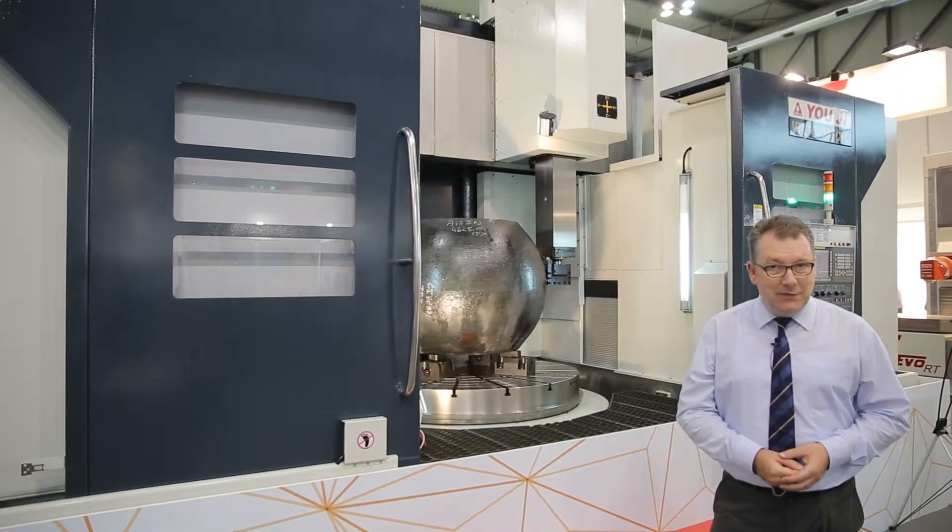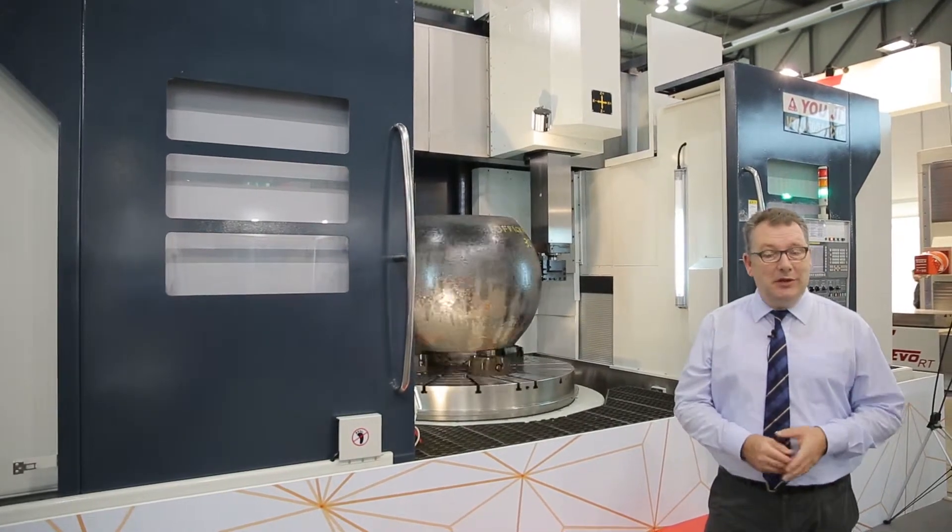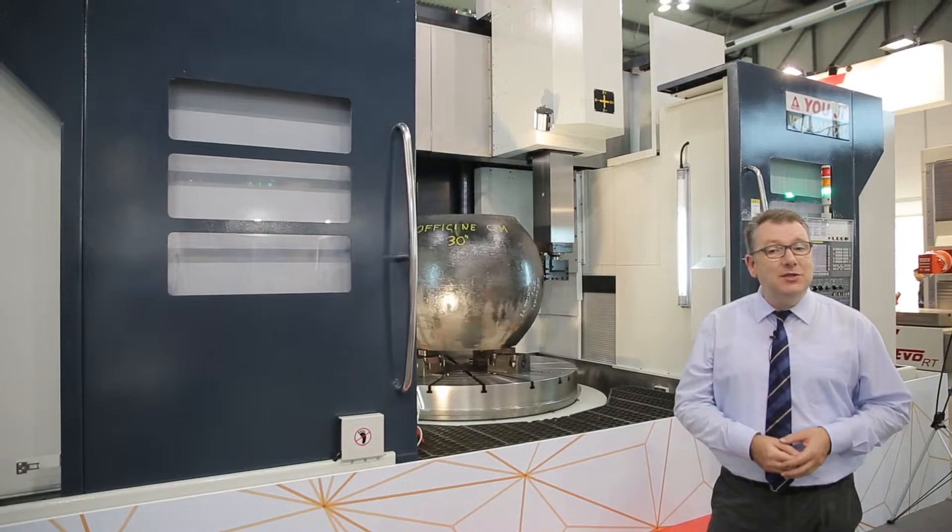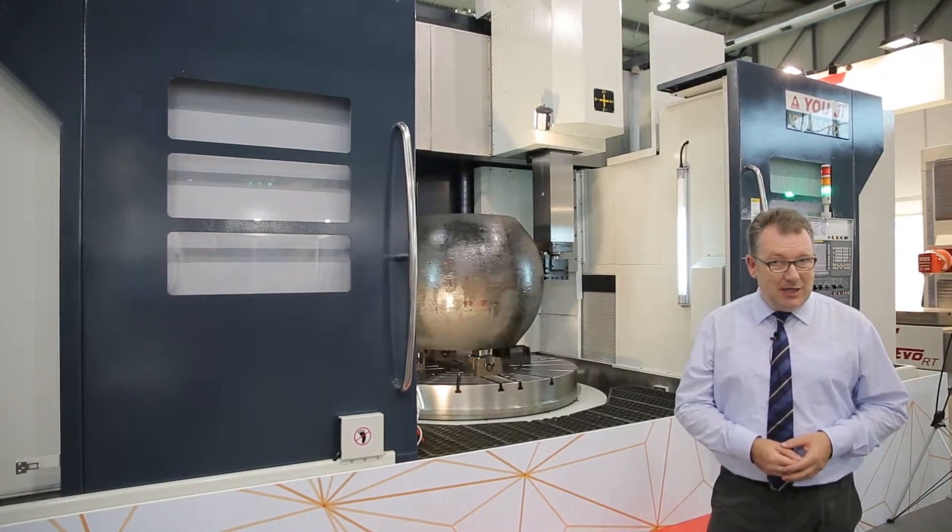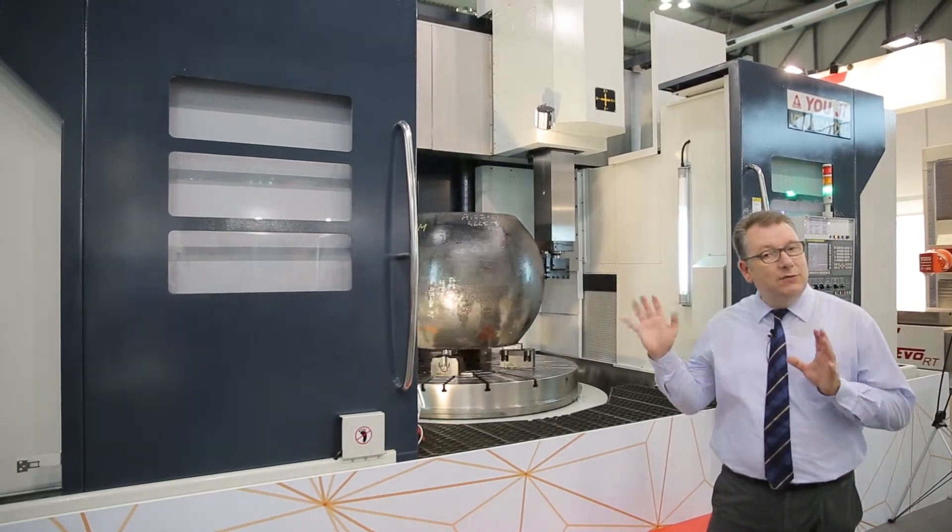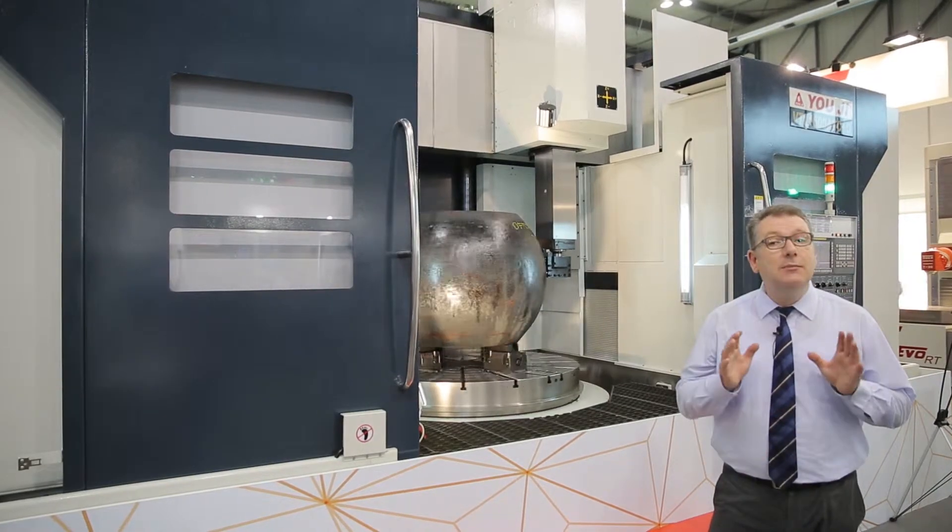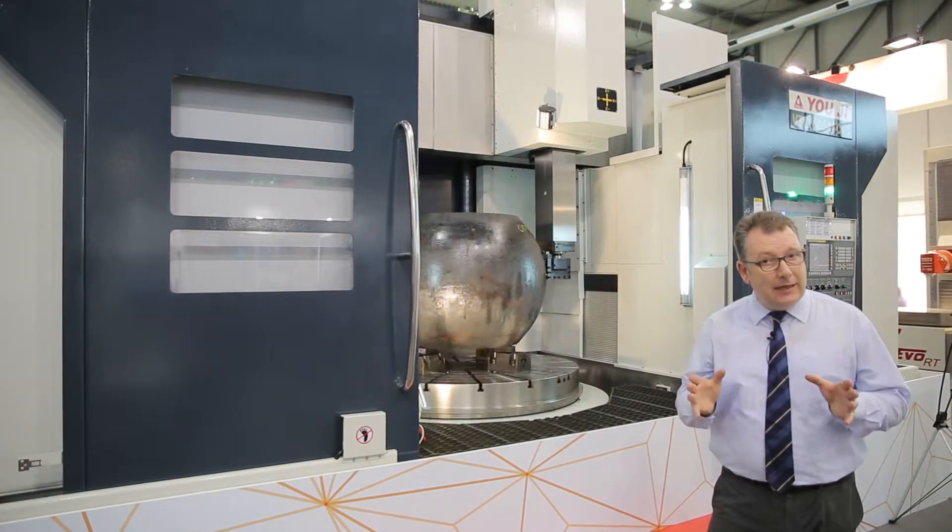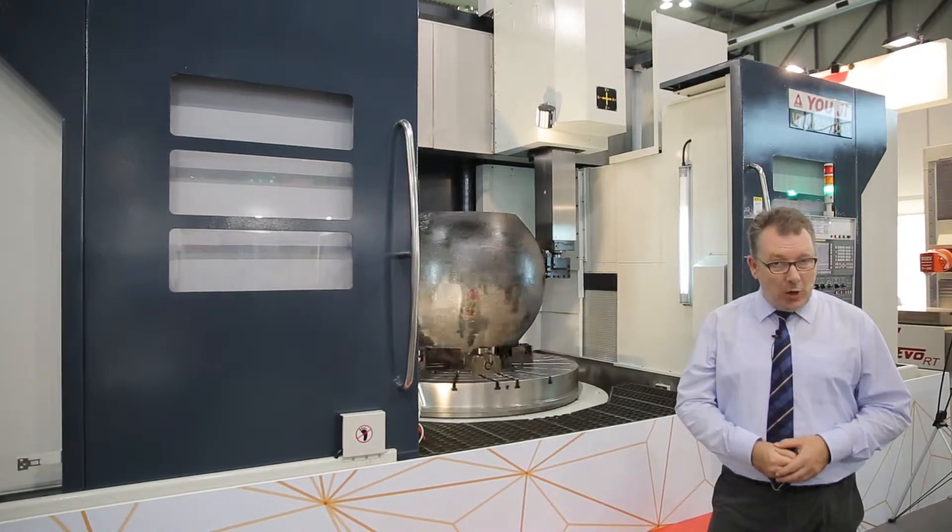We're here at EMO Milano 2015 at the Yota booth. This is the VTL 1600 ATC Plus C. This machine is fully C-compliant, so it's completely enclosed, and that includes the auto tool changer. The tool changer is kept completely clean even during heavy cutting operations.